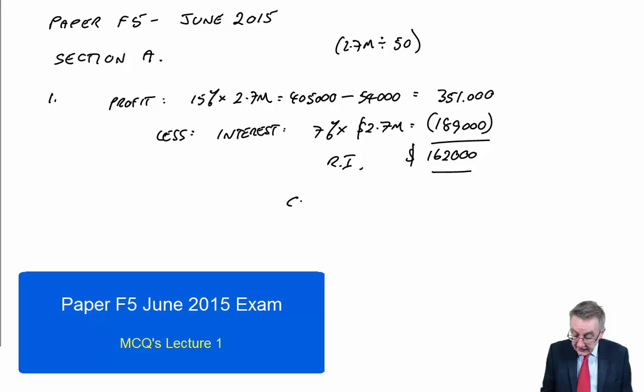351,000 minus 189 gives residual income of 162,000. The answer is C. Remember in the exam, it's got to be speed. Nobody's going to look at your workings, so don't waste time being pretty. As fast as you can. When I get the answer, let's move on.